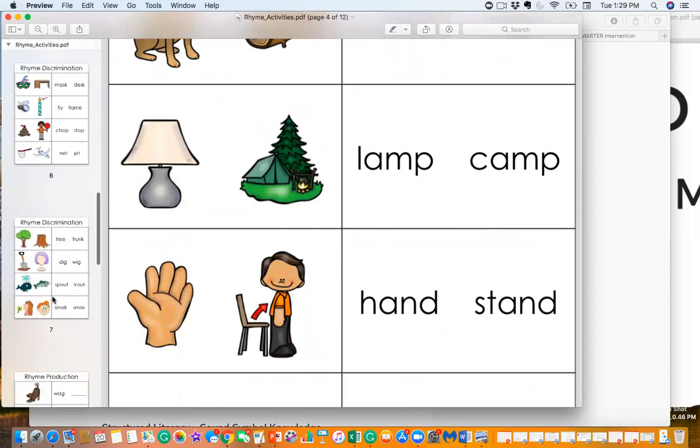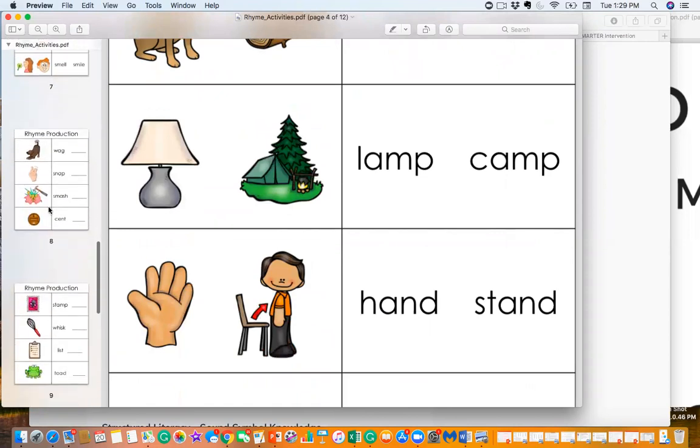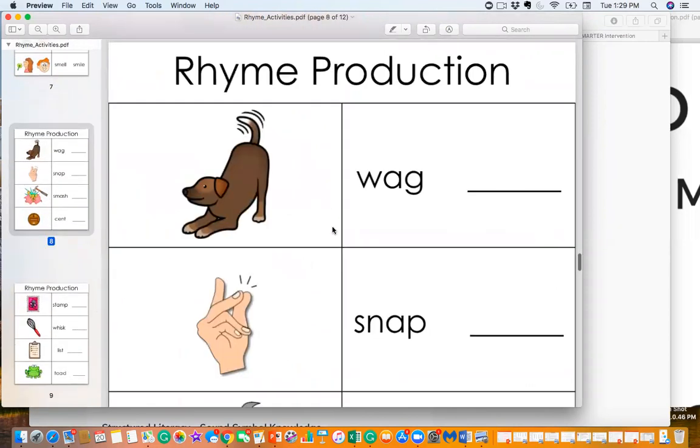Another activity in this rhyme packet is rhyme production. Now rhyme production is much more of a complex skill than determining if the word rhymes or doesn't. So the rhyme discrimination, do that first. That's kind of building up their scaffolding, right? Then rhyme production would come later.